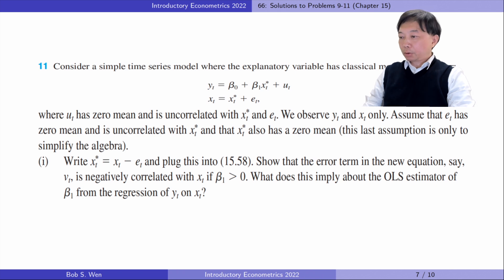Let's find answers to problem 11. Consider a simple time series model where the explanatory variable has a classical measurement error. μt has a zero mean and is uncorrelated with xt star and et. We observe yt and xt only. Assume that et has a zero mean and is uncorrelated with xt star, and that xt star also has a zero mean.